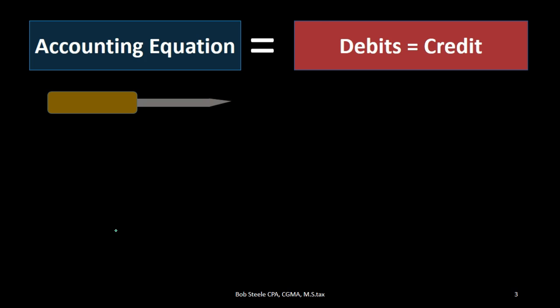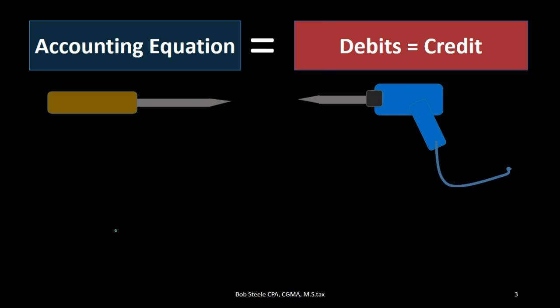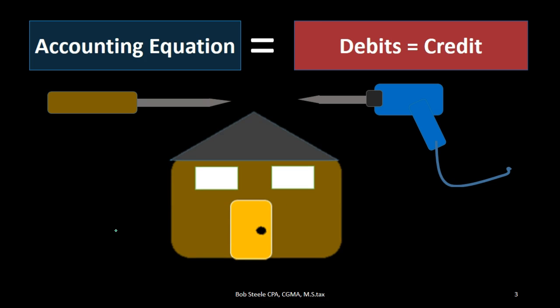However, if we have a big job we might want an electric screwdriver — a bit more parts, needs electricity, harder to use — but if we're building something like a house, we probably want the electric screwdriver. Same with the accounting equation and debits and credits: the equation is easier, but if we're building financial statements we need a better tool. We need debits and credits.